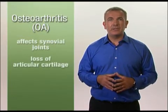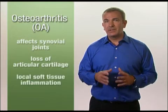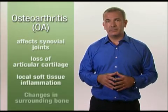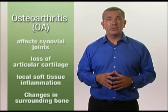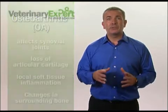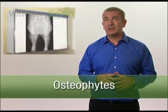Osteoarthritis is a condition of synovial joints. There is loss of normal cartilage, thickening and inflammation of the synovial membrane and joint capsule, and remodelling of the underlying bone. The bony changes include the formation of bumps around the edges of the joint. These are called osteophytes and they can be seen on x-rays.